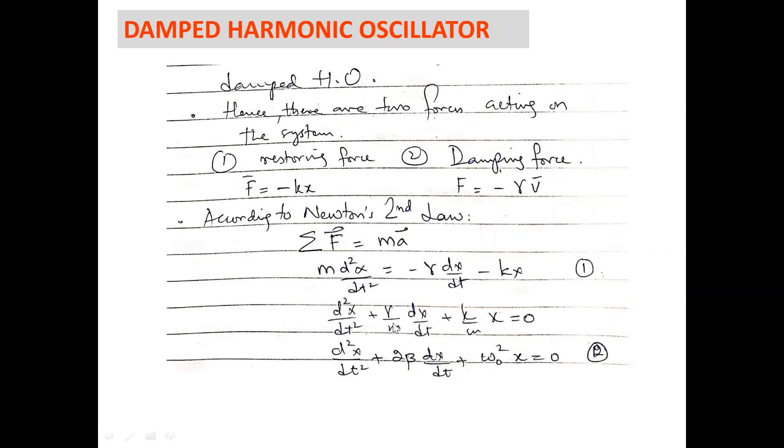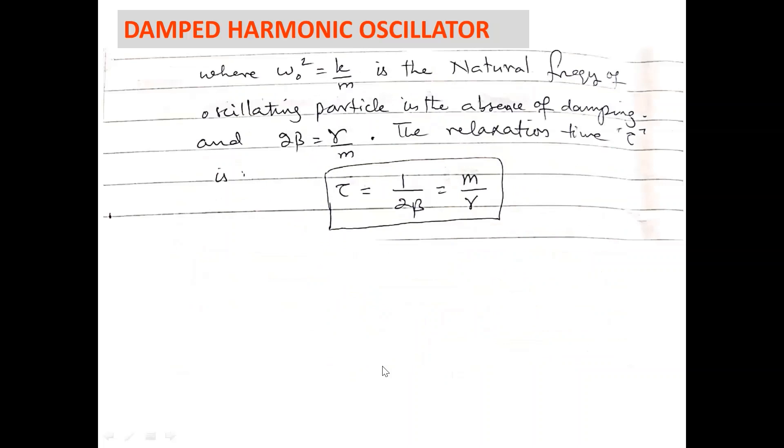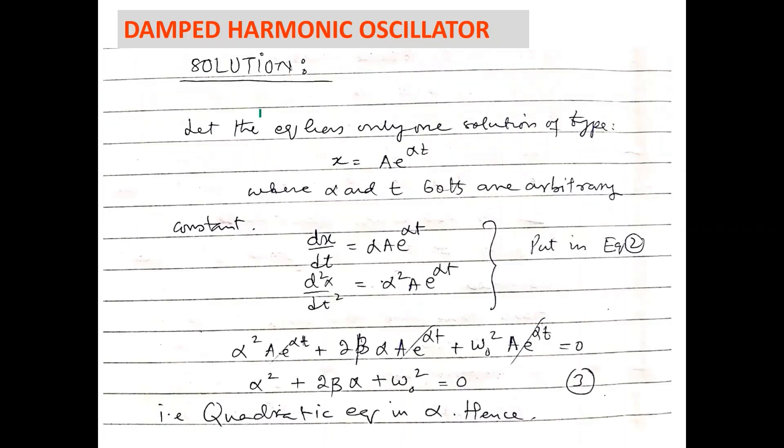Where gamma over m is 2 beta and k over m we can replace by omega naught square. We now have a second order differential equation, where omega naught square equals k over m is the natural frequency of oscillating particle in the absence of damping. And 2 beta equals gamma over m. The relaxation time tau can be written as tau equals 1 over 2 beta, which equals m over gamma.